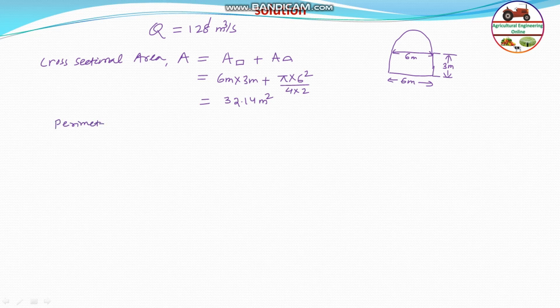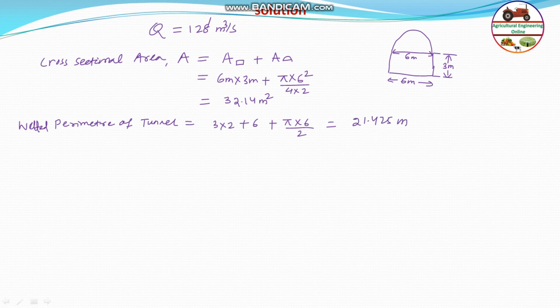Now we calculate the wetted perimeter. If the tunnel is flowing full, the wetted perimeter equals the perimeter of the lower rectangular section — that is (3 × 2) for the two sides plus 6 for the base — plus the semicircular arc, which is π × d / 2 = π × 6 / 2. Therefore, the wetted perimeter equals 21.425 meters.